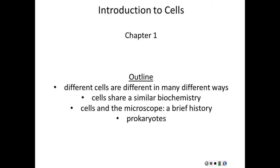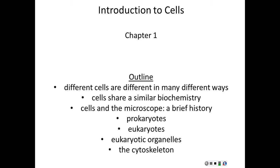We'll talk about the history of the microscope and what an influential effect it had on cell biology — by the microscope we mean cellular magnification of all kinds, starting with the simple compound microscope and going all the way to electron microscopy. We'll talk about prokaryotes briefly, just to get a sense of how those cells differ from eukaryotic cells. Then we'll take a tour of the average eukaryotic cell, looking at the different organelles and their roles. We'll wrap up with a brief discussion of the cytoskeleton and model organisms.